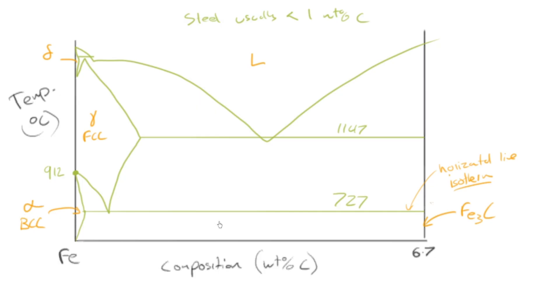So you can identify the two phase regions, as we've done before. Try on a horizontal line, left to right. This is going to be alpha plus Fe3C. See if you can predict these before I identify them. This region here is going to be alpha plus gamma. This region here then has to be left gamma, right-hand side Fe3C.